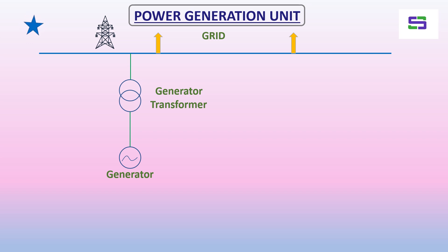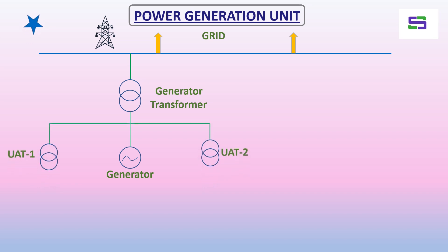But how will the auxiliary systems run inside a power plant, and what will be the power supply arrangement? To understand this, we need unit auxiliary transformers. These unit auxiliary transformers will supply power to the auxiliary loads inside the power plant — the unitized loads.